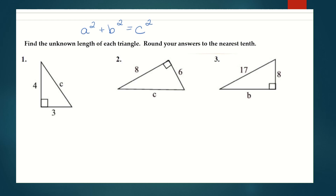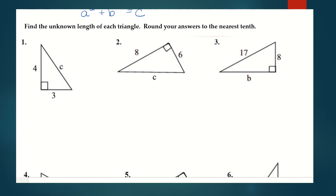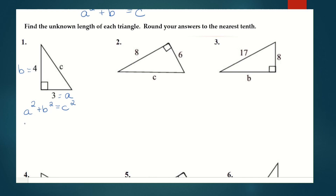For number one, we're finding the unknown length of each triangle and rounding to the nearest tenth if necessary. I have the value of each leg — three and four create a right angle, so those are my two legs. Side A has a length of three, B has a length of four, and C squared is our hypotenuse, which we don't know yet.